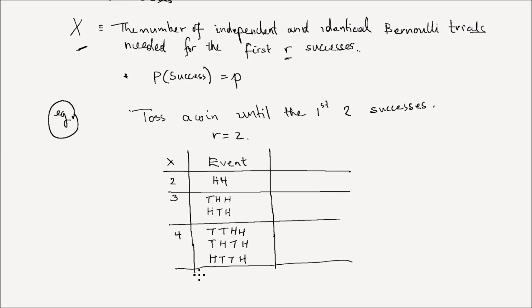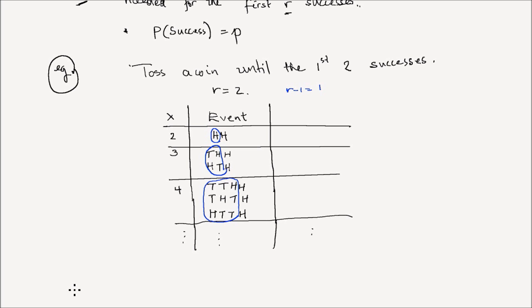What you observe is that the last event is always going to be the success event. The previous X minus 1 trials should have R minus 1 successes. For X equals 3, the previous 2 events should have 1 success. For X equals 4, the previous 3 events should have 1 success. That pattern gives us an idea of how we could write the PMF of a negative binomial distribution.